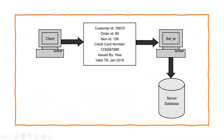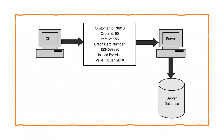Here you can see a client and a server, with a server database that stores all the data sent from the client. Every piece of data and information will be available in this database. When a client approaches a server, they are assigned their own customer ID, order ID, item ID, and credit card number. A best example is when you do online shopping on platforms like Amazon or Flipkart — you are given a customer ID, order ID, and item ID separately.